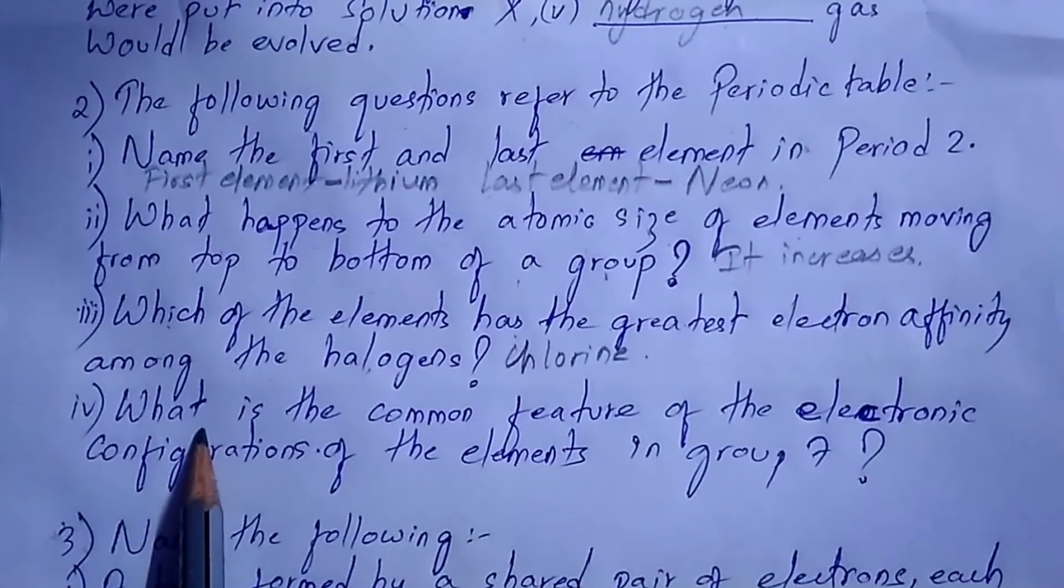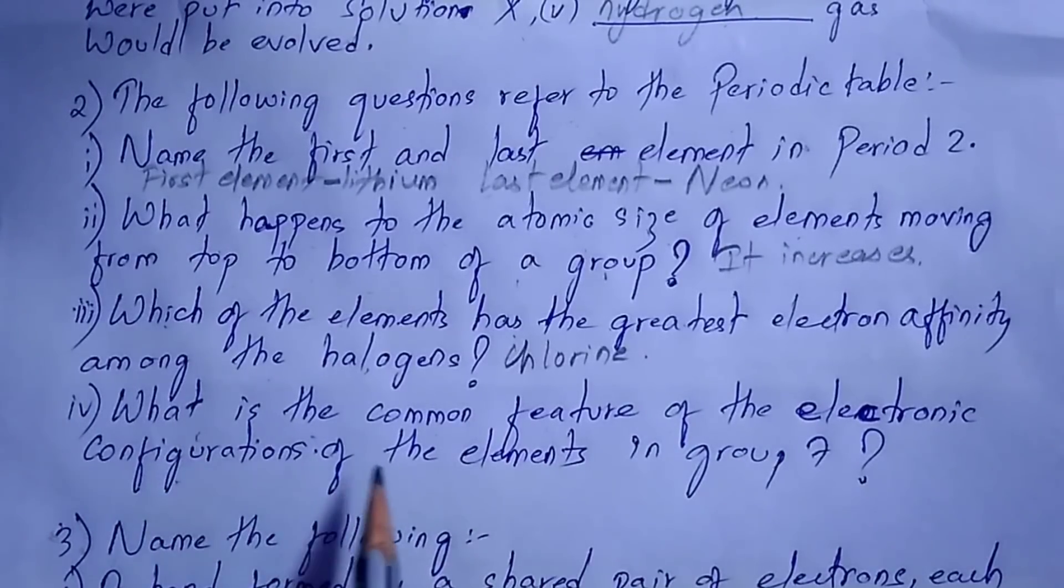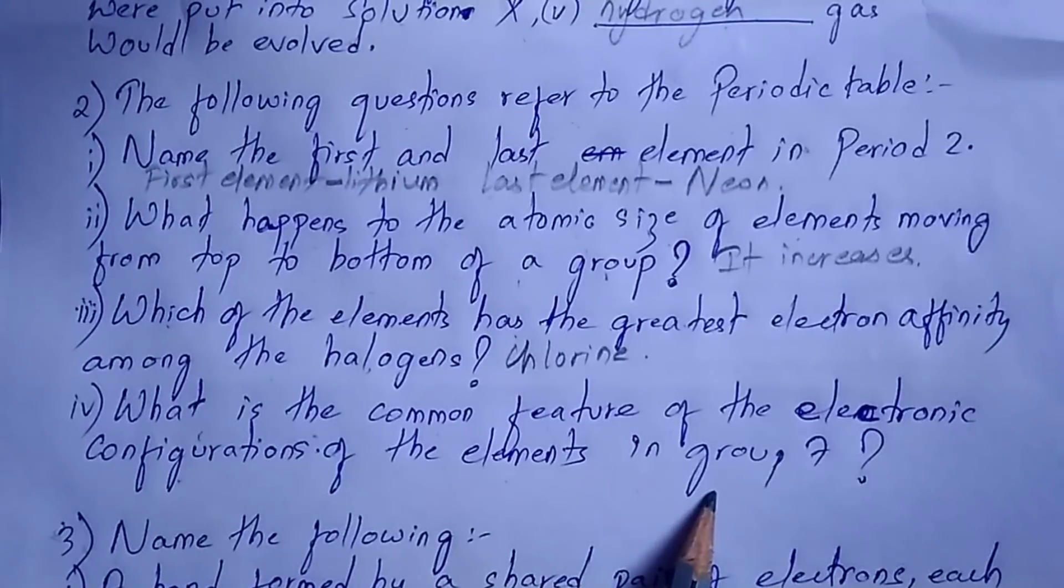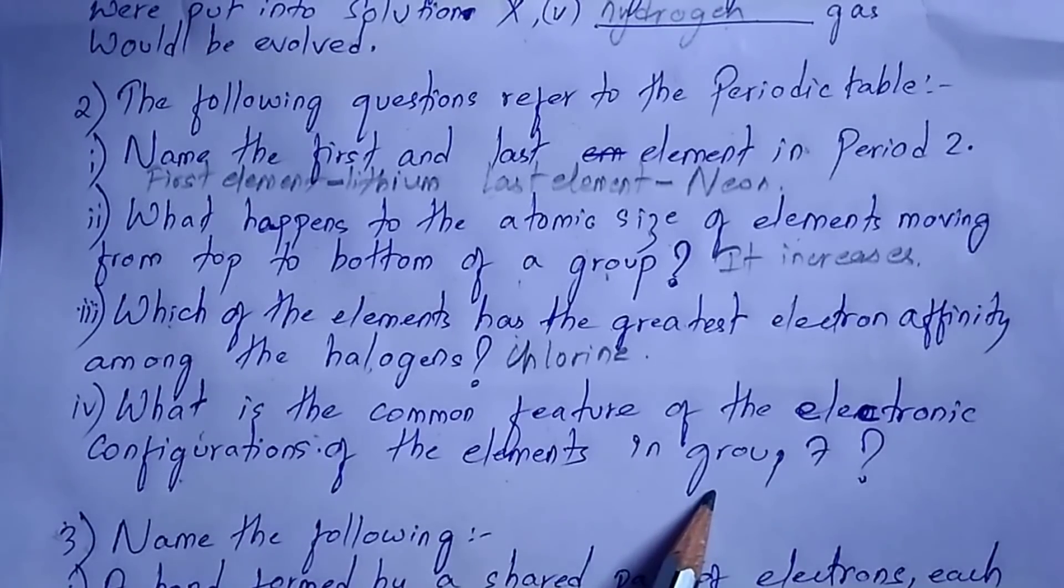Next question: what is the common feature of the electronic configurations of the elements in group 7? Elements of group 7 have 7 electrons in their valence shell. This is the common feature.